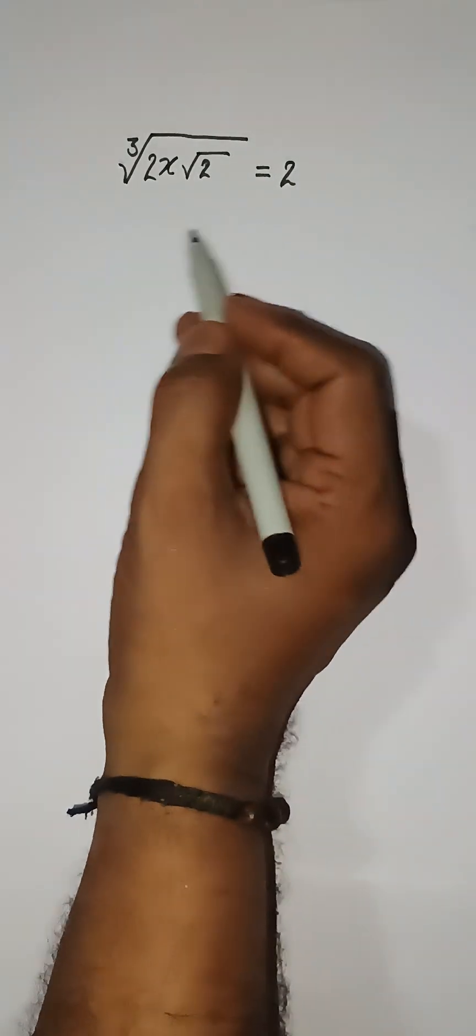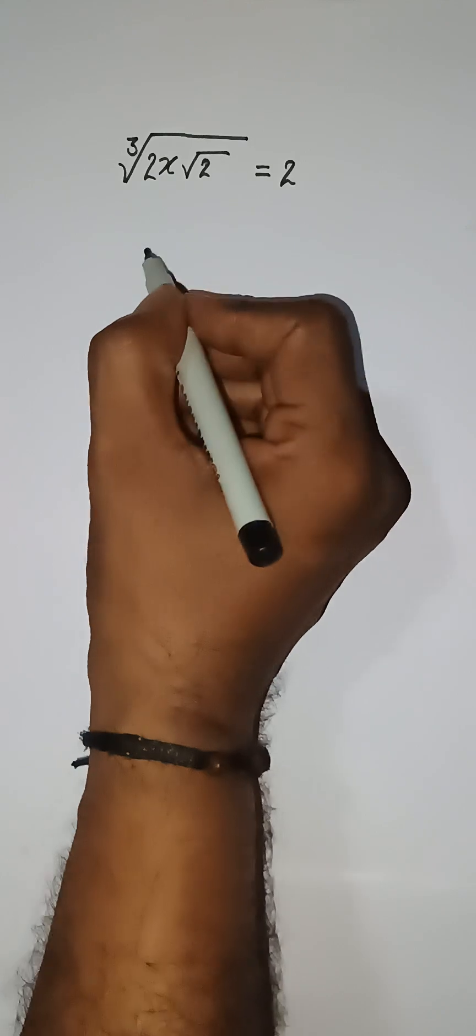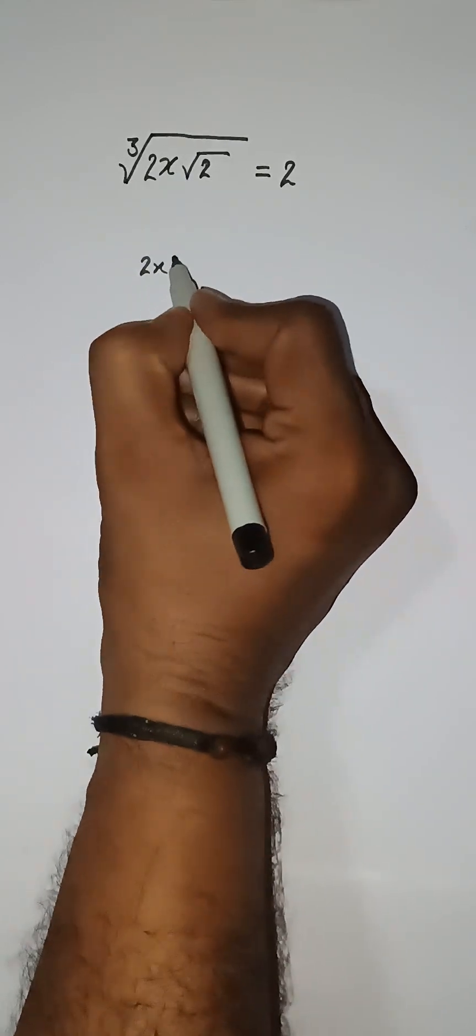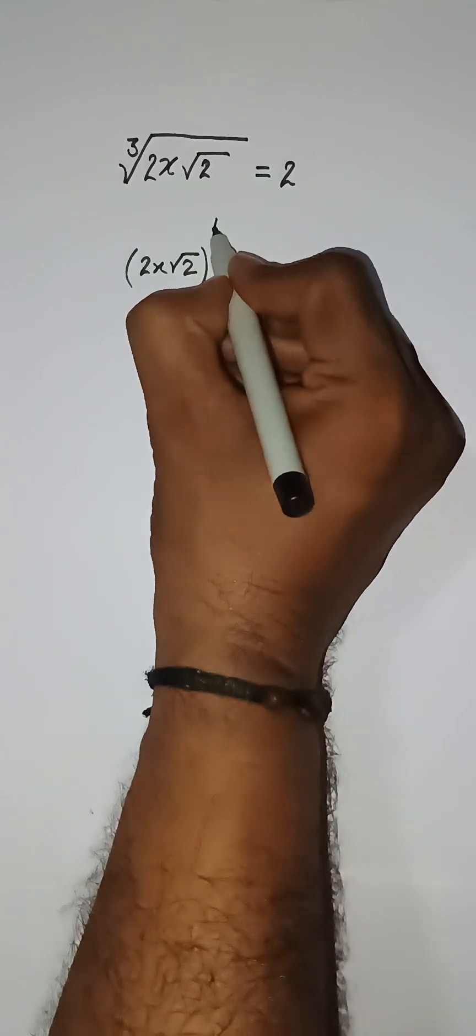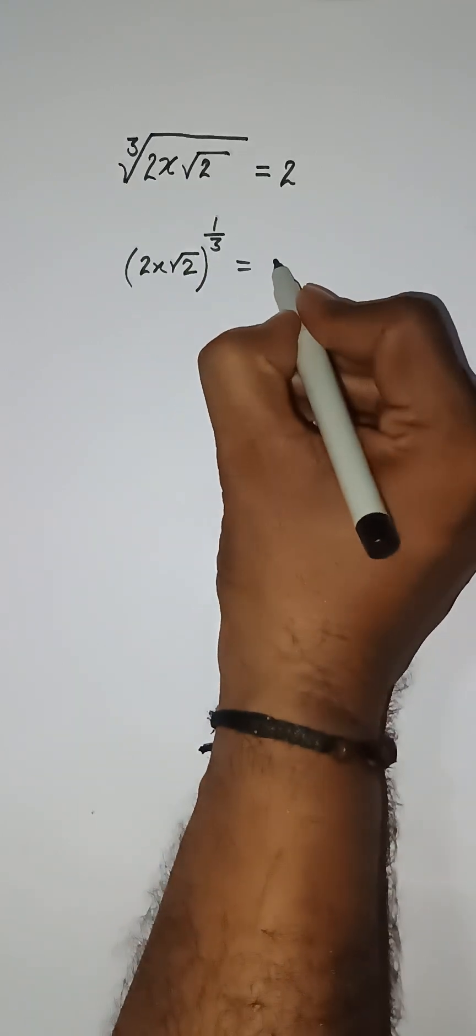Hello everyone. Let's solve this problem within 10 seconds. Here we have 2x root under 2, then power 1 upon 3, equals 2.